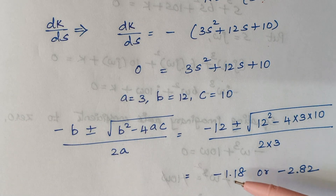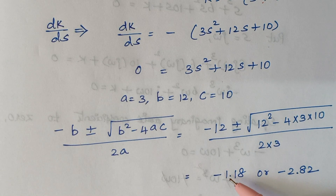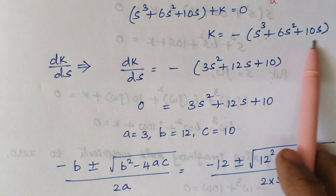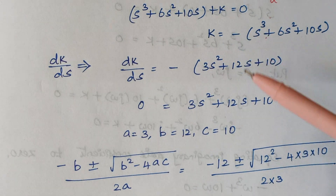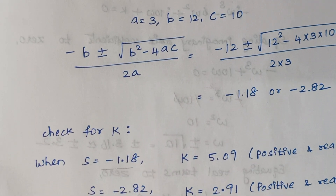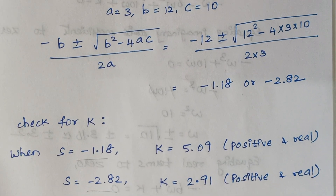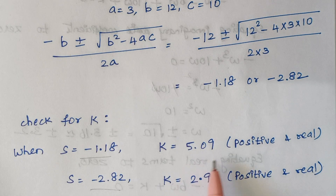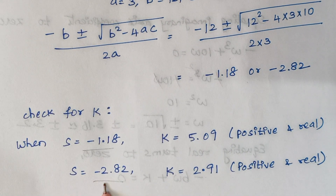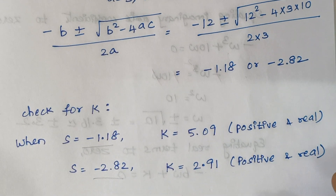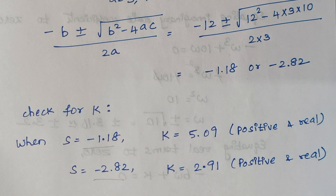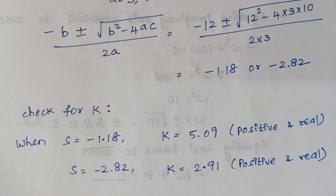We now substitute these values of S into the expression for k to check whether k is positive or not. When substituting S = minus 1.18, k is positive and real. When substituting S = minus 2.82, k is again positive and real. This means the root locus has breakaway or break-in points — it could be two breakaway points, or one breakaway and one break-in. Only by drawing the plot on a graph sheet can we finally conclude.